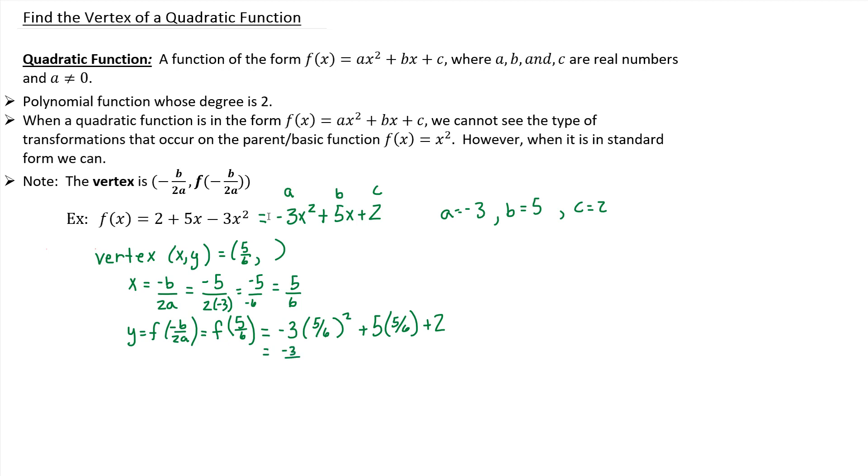Then we need to simplify and be careful with all our math. So this is negative 3 over 1 times, make sure you're following order of operations. So we need to take 5 sixths and square it, which is 5 sixths times 5 sixths, which is 25 over 36.